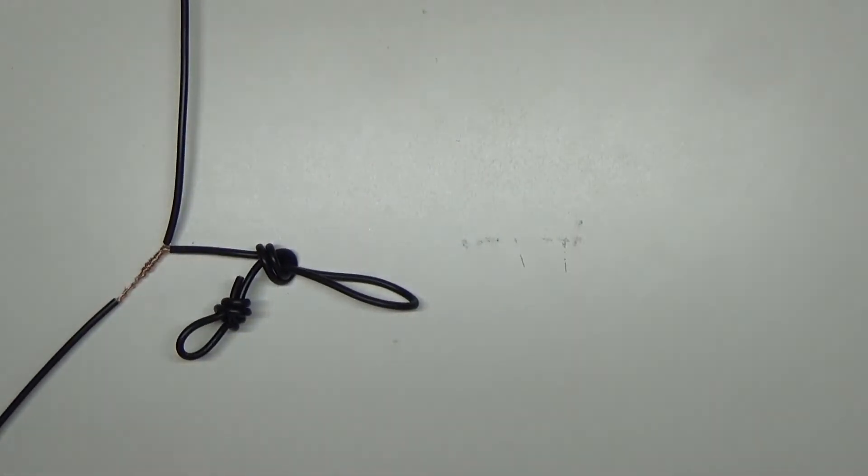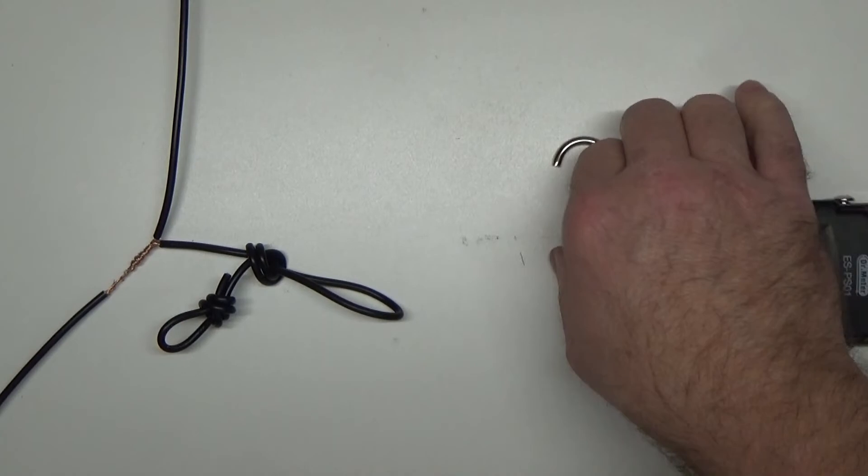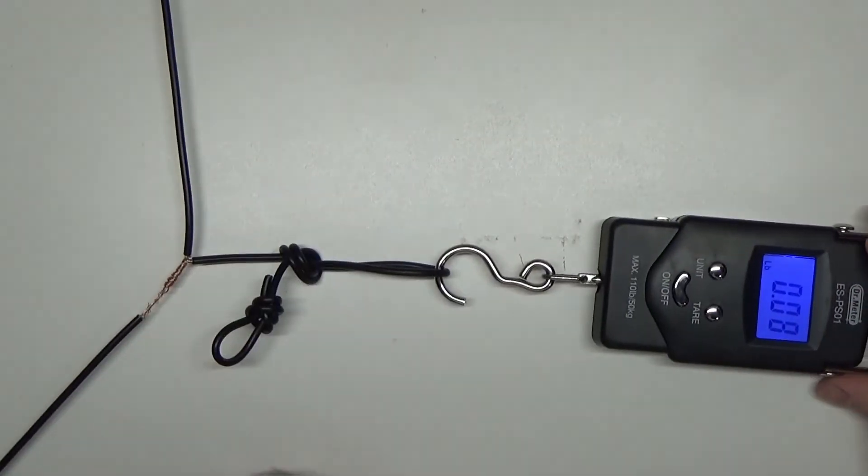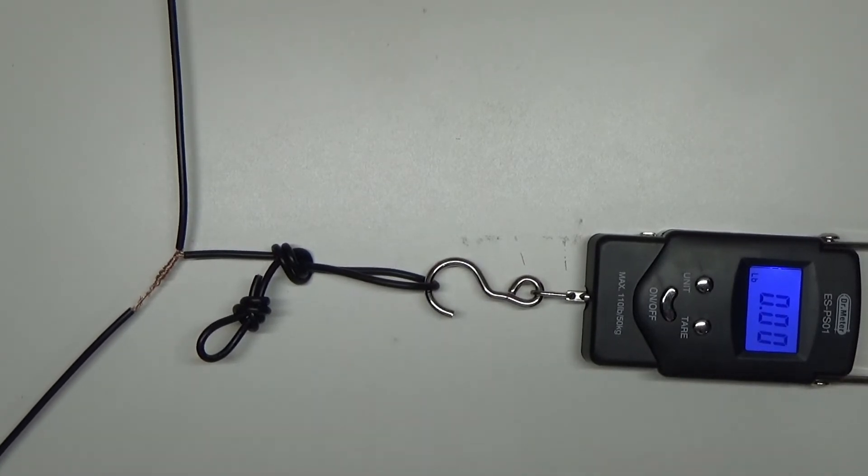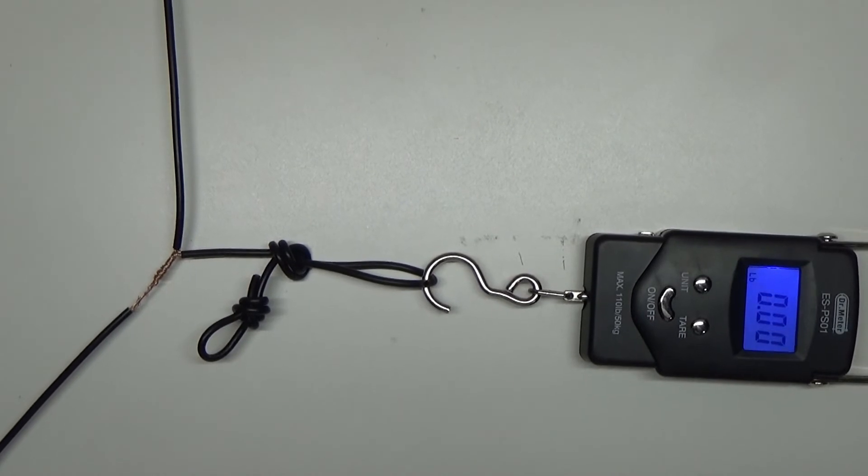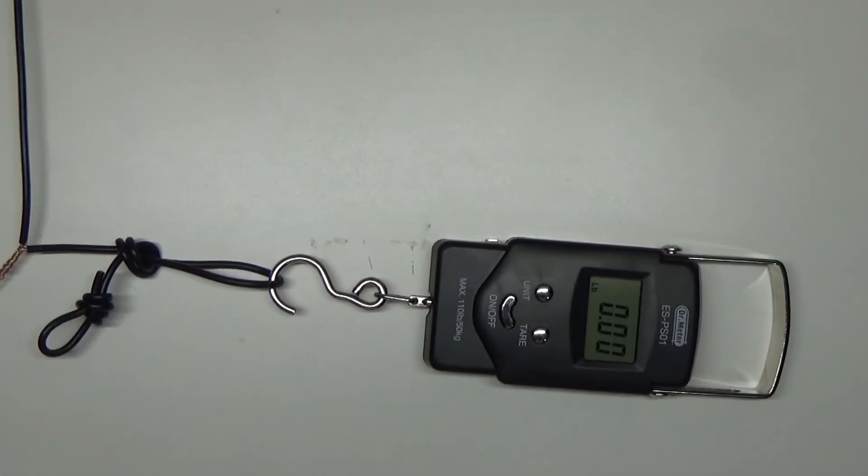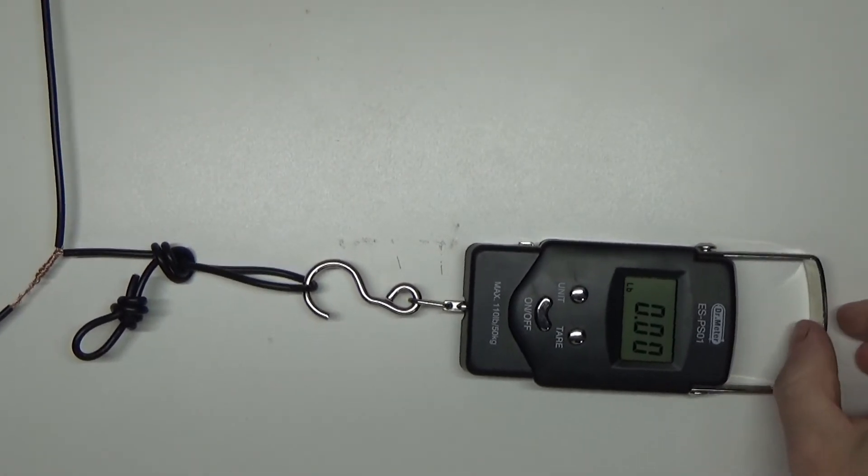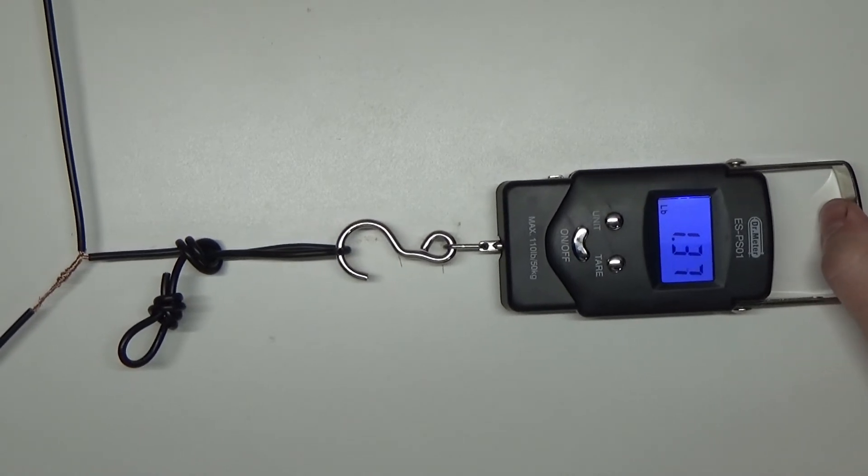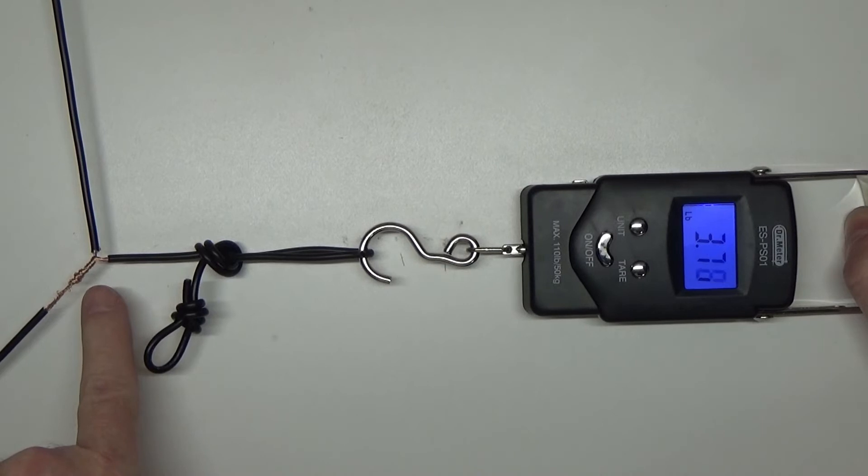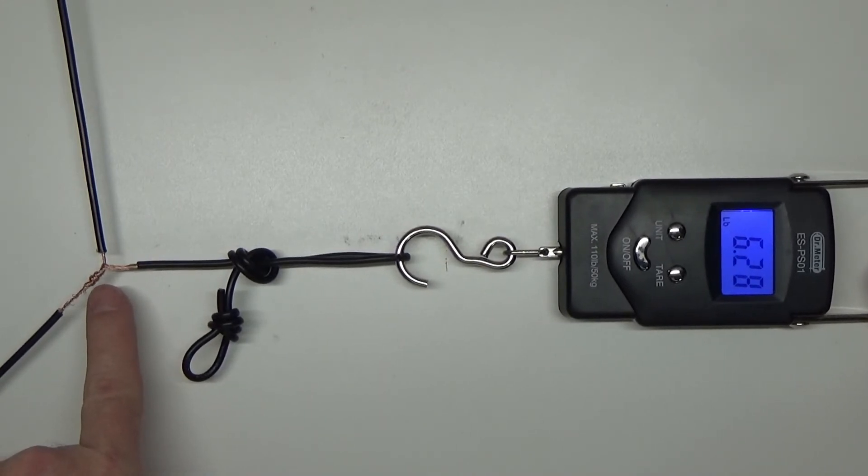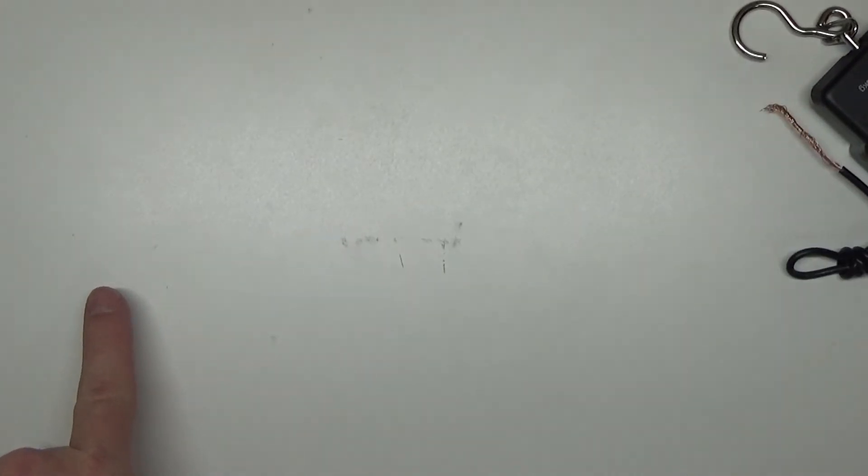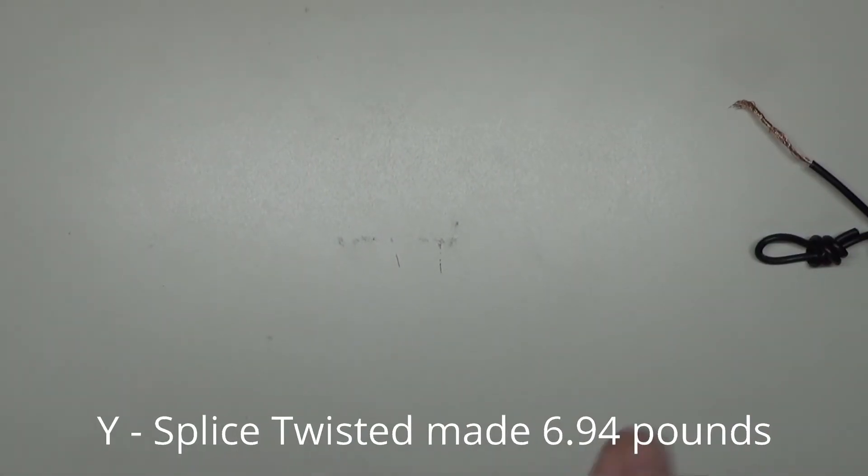There we go, Y splice set up. Take our scale, hook it on here. Here we go, ready? Let's see, let's move our camera a little bit because I want to zoom in a little tighter so you guys can see this and the scale both. All right, ready? Let's do this pull. Look at that, I'm at three pounds to start to unwrap, four pounds, five, six, but it's unwrapping. There you go. So I made it to 6.8 pounds I think, I'll have to look at the video here in a bit to confirm that.